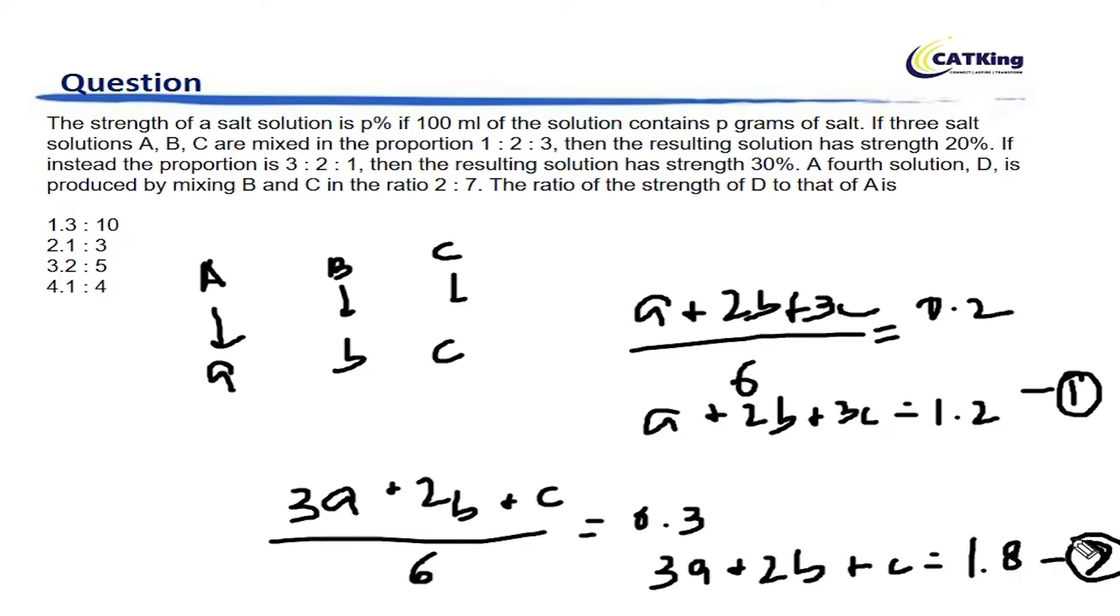Now, if we subtract 1 from 2, we will get 2 times A, 2B and 2B will cancel, minus 2 times C is equal to 0.6. So we can say that A minus C is equal to 0.3. See, we have 2 equations and 3 variables. To solve that, we can express 2 variables in terms of 1 variable. Let's express B and C in terms of A.